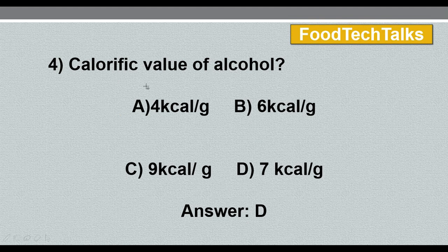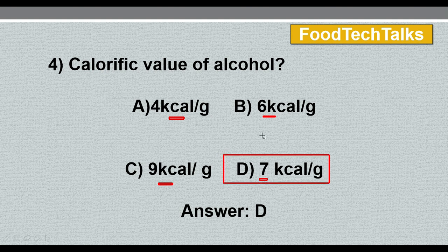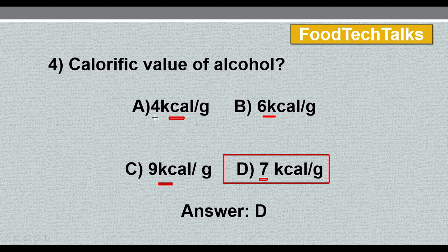Fourth question: calorific value of alcohol — options are: A) 4 kcal/g, B) 6 kcal/g, C) 9 kcal/g, D) 7 kcal/g. The answer is option D, 7 kilocalorie per gram. For reference, the calorific values commonly asked are: carbohydrate 4 kcal/g, protein 4 kcal/g, and fat 9 kcal/g.